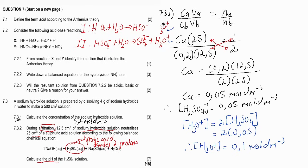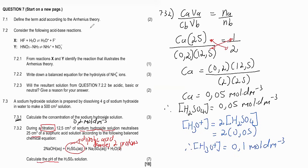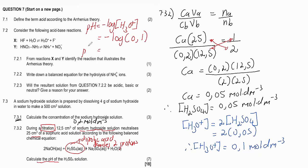pH = −log[H₃O⁺] = −log(0.1) = 1. So the pH of the sulfuric acid solution is 1. That's how you were supposed to answer that question for seven marks.